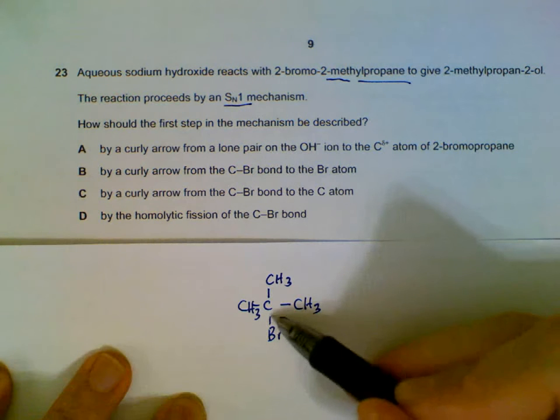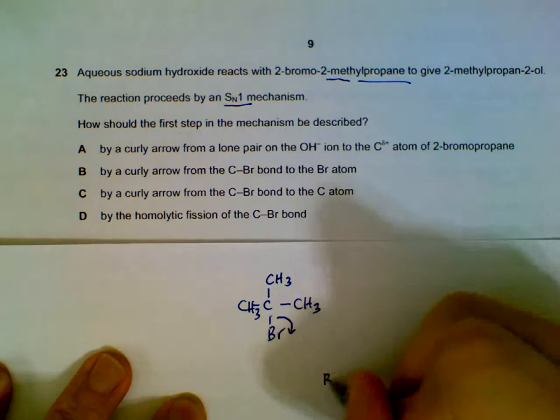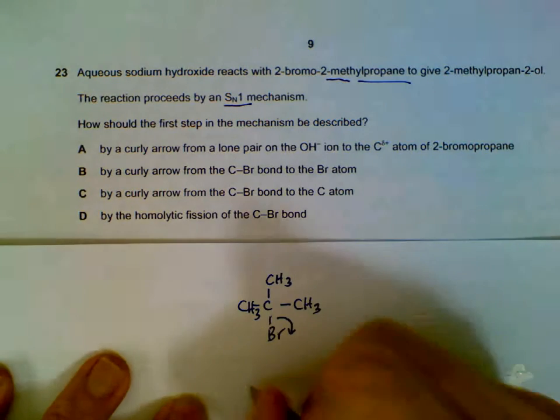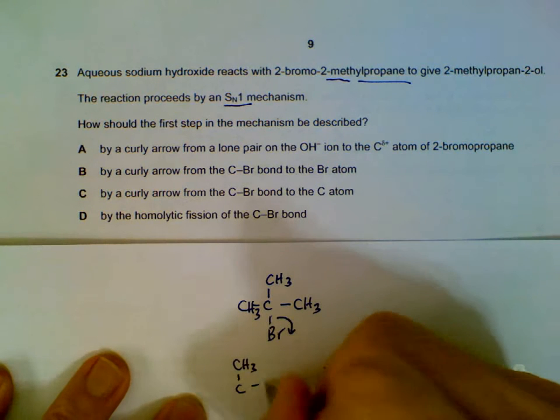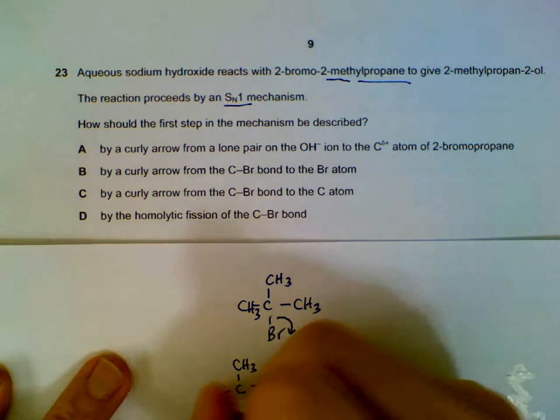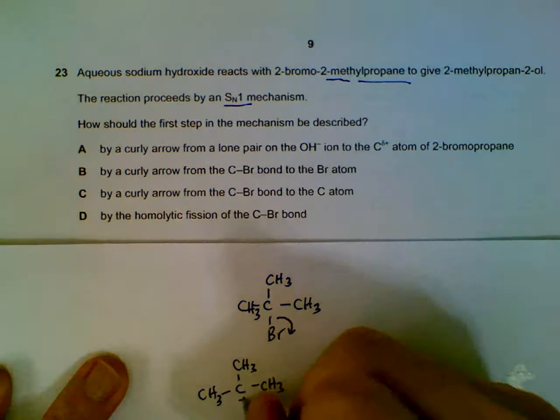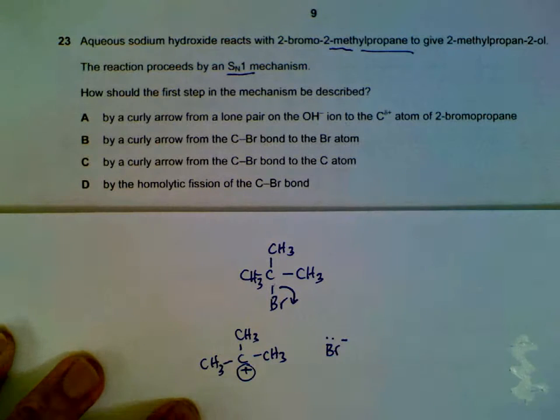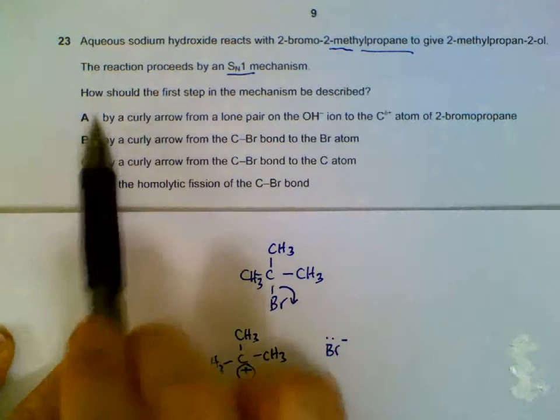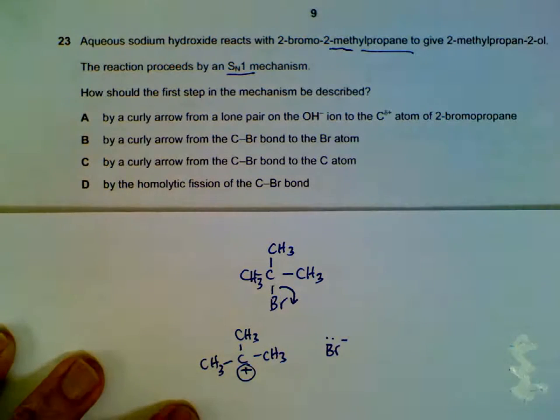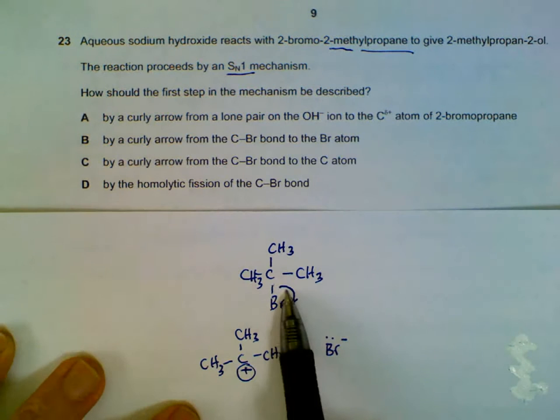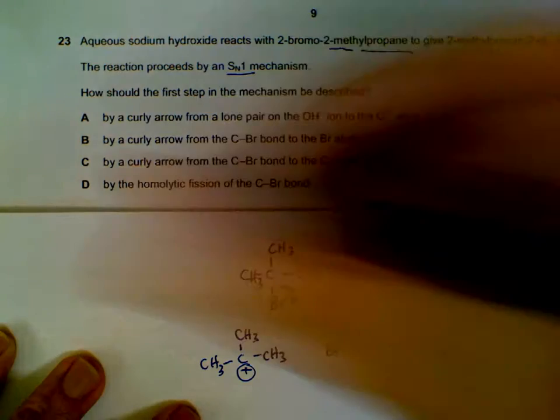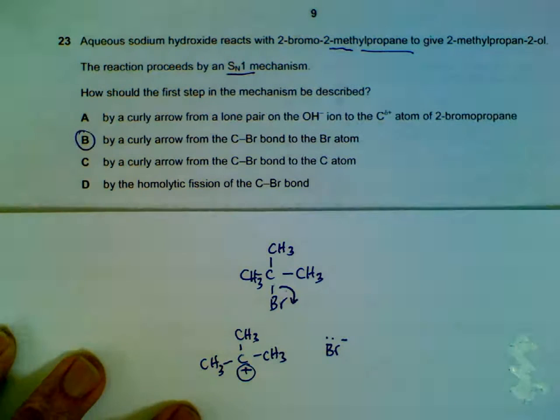These two electrons will follow this bromine out, and then we will get the rest of the molecule becoming positively charged. So just a quick recap on the mechanism for SN1 reaction. And we look at the options - how should the first step be described? We will have a curly arrow from the C-Br bond to the Br atom. That's how the bond is broken.